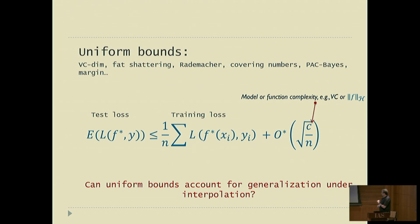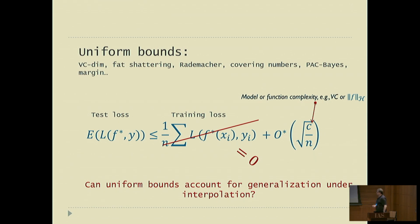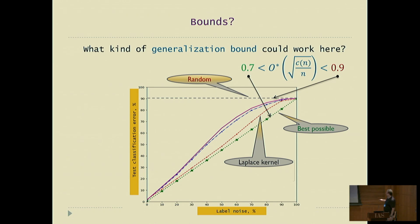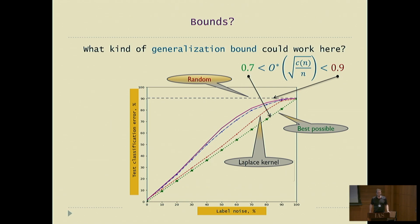Can a bound of this form explain what we saw? The training loss here is zero, so the test loss must be bounded directly by the complexity term. If you look at a point with 80% noise: the Bayes optimal is about 70%, random guess is 90%. For a bound to be correct it has to be bigger than 70%; for it to be non-trivial it has to be smaller than 90%. That's the only window in which you can describe this behavior.